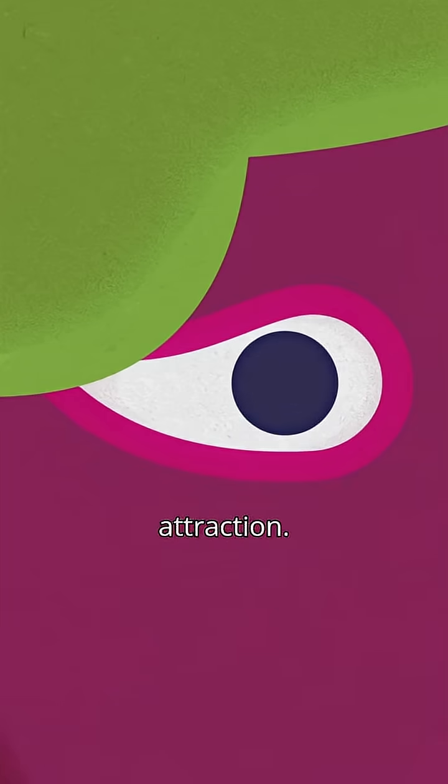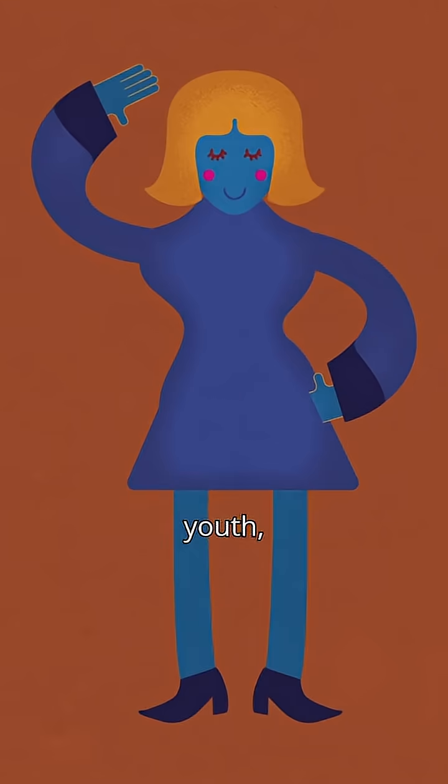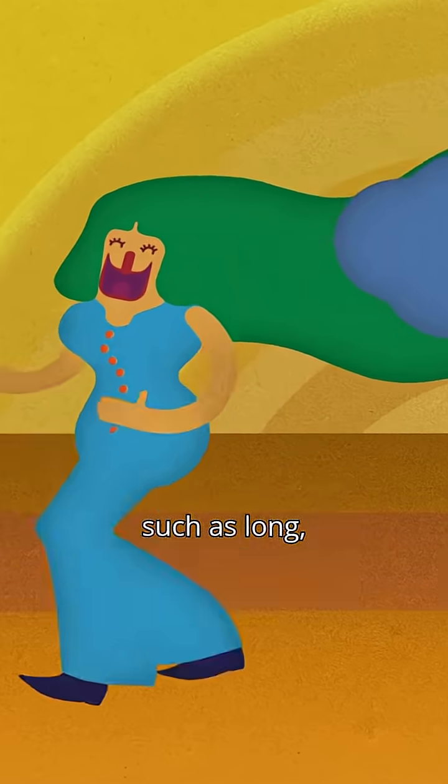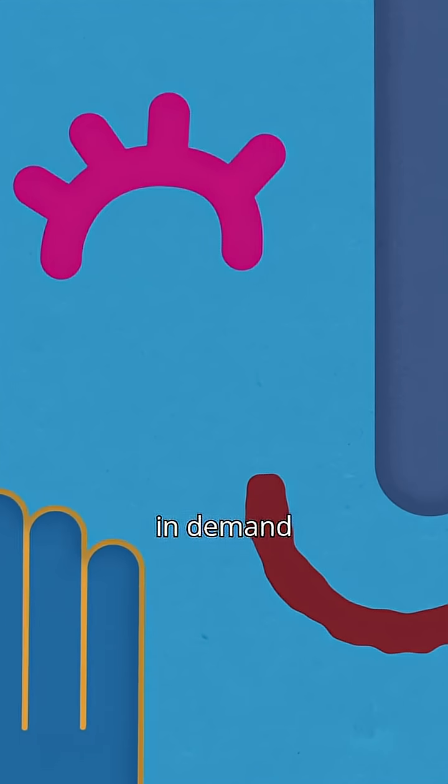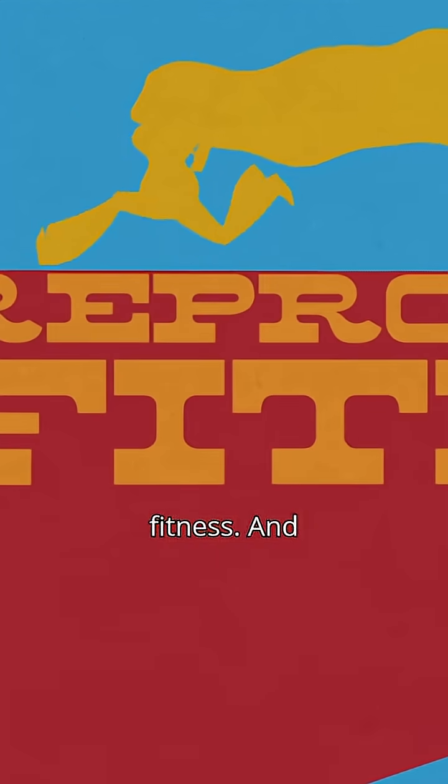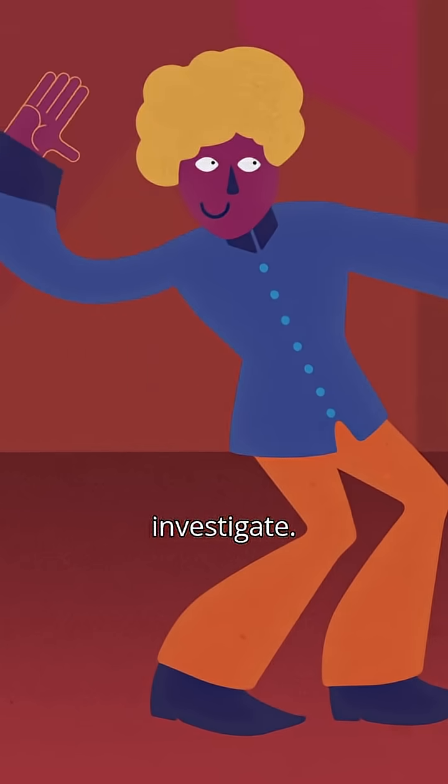The eyes are the first components in attraction. Many visual beauty standards vary between cultures and eras, and signs of youth, fertility, and good health, such as long, lustrous hair or smooth, scar-free skin, are almost always in demand because they're associated with reproductive fitness. And when the eyes spot something they like, our instinct is to move closer so the other senses can investigate.